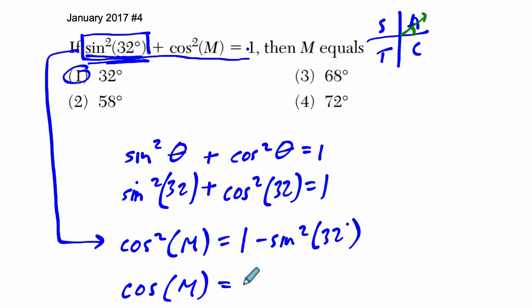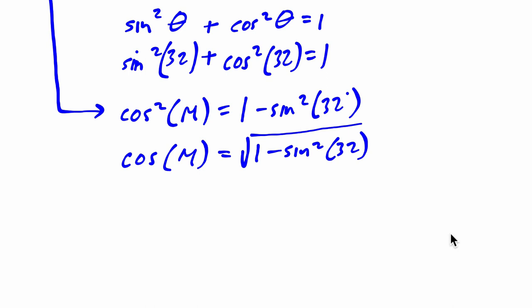So that means I take the positive square root of 1 minus the sine squared of 32. Okay. Then what do I do? Well, I don't want to know what the cosine is equal to. I want to find out what M equals. In other words, I'll take the inverse cosine.